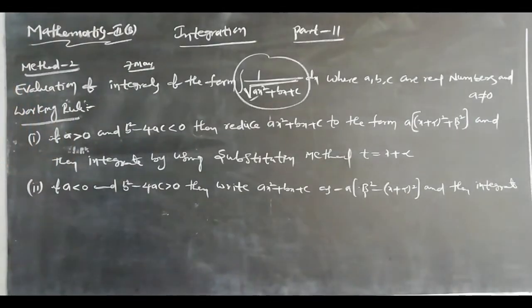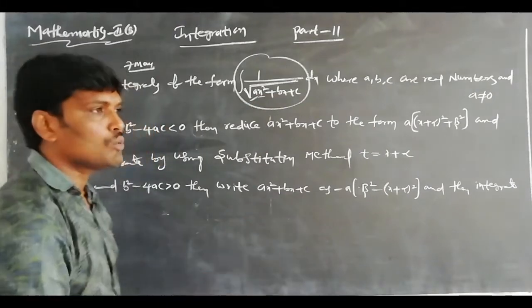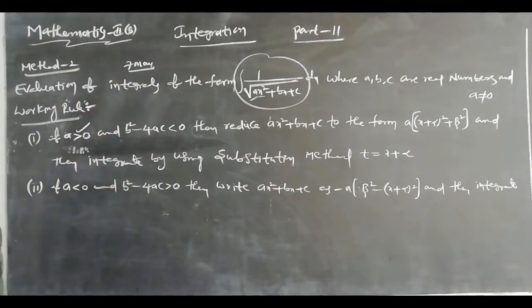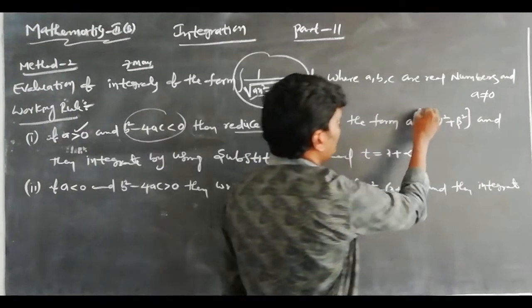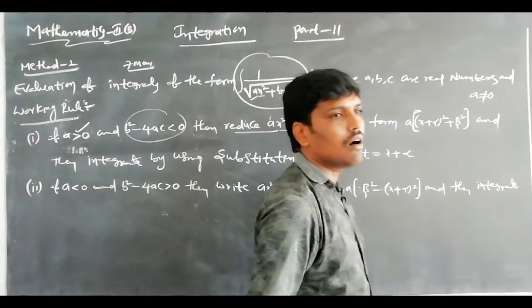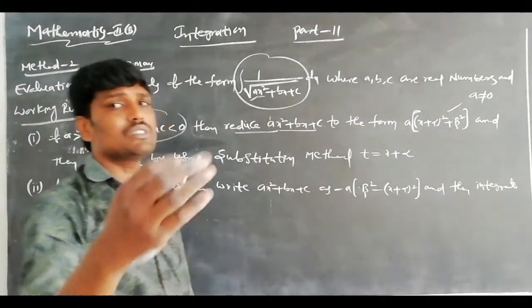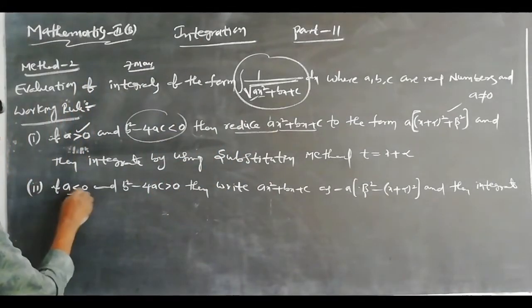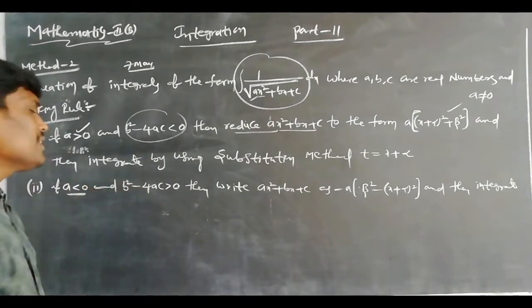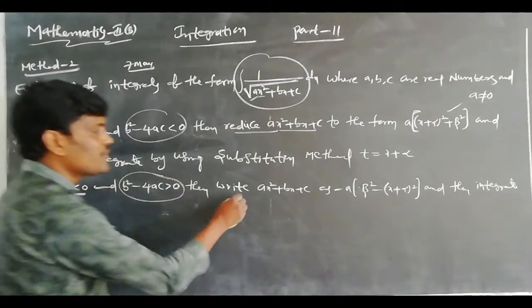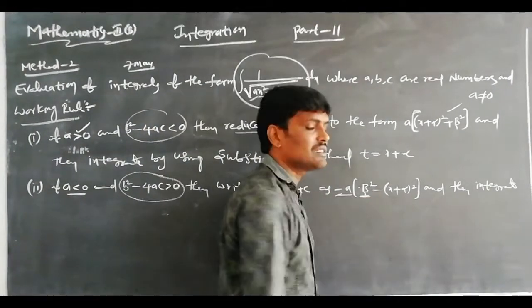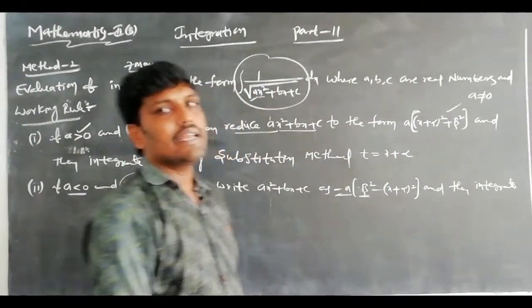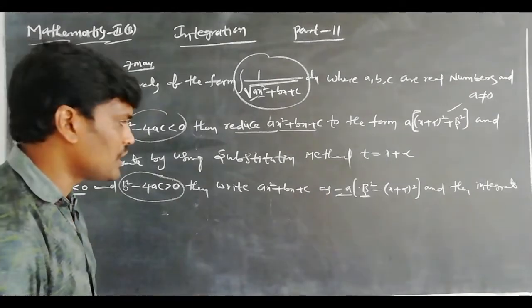There are two working rules depending on the coefficient of x². If the x² coefficient a is positive, the discriminant is negative and the roots are complex. Reduce ax² + bx + c to the form a(x + α)² + β², then integrate using substitution. If a is less than zero, the discriminant is always positive. Factor out minus a, rewrite as minus a(β² - (x + α)²), then integrate using substitution.